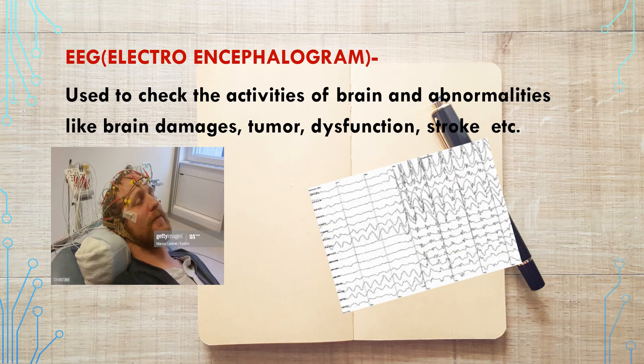The next part of neurological examination is EEG — that is electroencephalogram. If the patient's impressions are not normal, then only we will send the patient for EEG. EEG is used to check the activities of the brain and abnormalities like brain damage, tumor, dysfunction, stroke, sleep disturbances, etc.